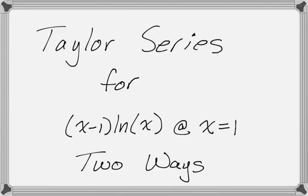In this video, we are going to write a Taylor series for the function (x minus 1) times natural log of x, centered at x equals 1. We're going to do it two different ways. The answers look a little bit different, and then we are going to show that they are equivalent. So let's get started.